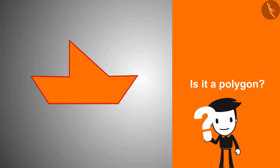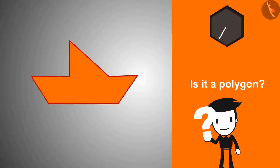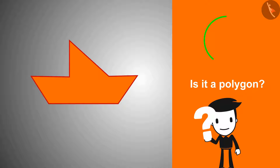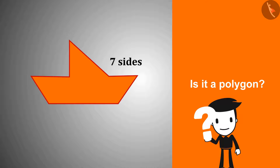The next shape is a polygon. Can you name it? Because it has seven sides, it is a heptagon.